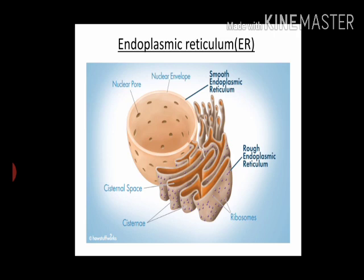The endoplasmic reticulum membrane is similar in structure to the plasma membrane — which we studied at the beginning of class. There are two types of endoplasmic reticulum: rough endoplasmic reticulum and smooth endoplasmic reticulum.